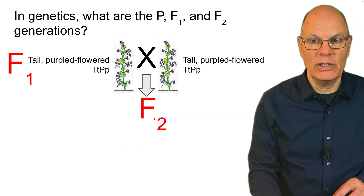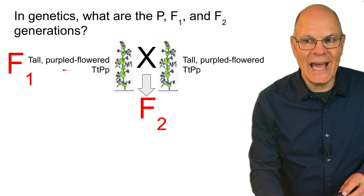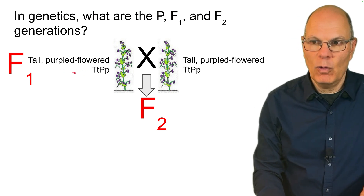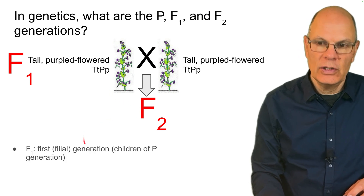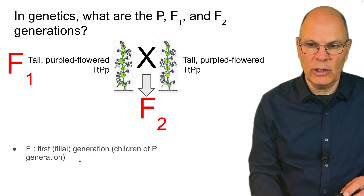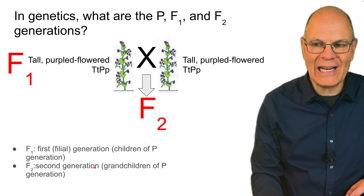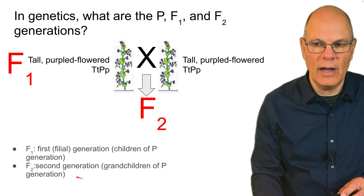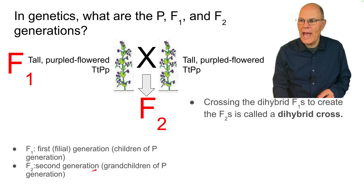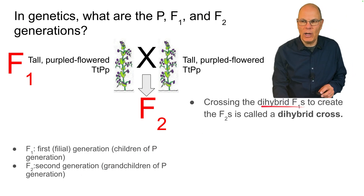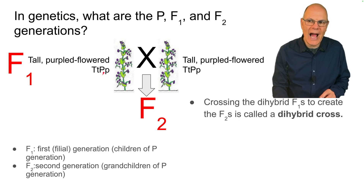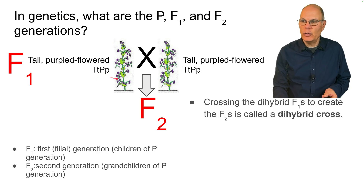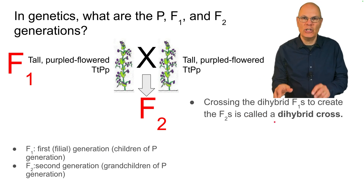Now let's go from the F1s to the F2s. You breed together the F1 generation — these double heterozygotes — and you get the F2s. The F1 is the first filial generation, and the F2 is the second generation; it's the grandchildren of the P generation. Crossing the dihybrid F1s — they're called dihybrid because they're double heterozygotes, mixed for two characteristics — that's called a dihybrid cross.